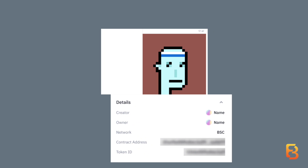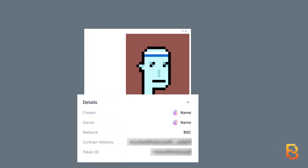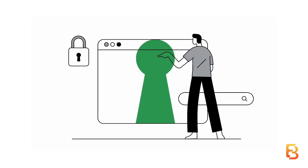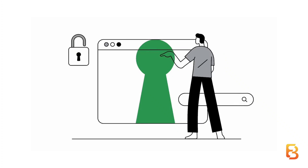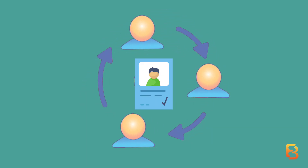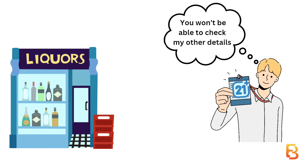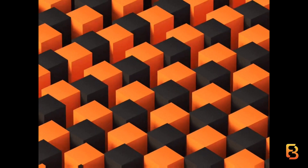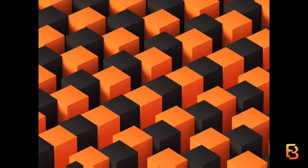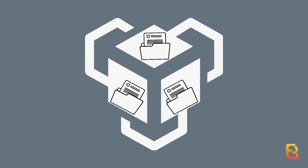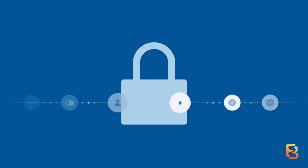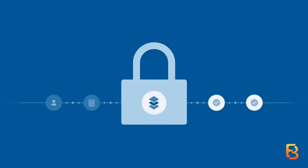NFTs are associated with public wallet addresses, meaning anyone with the address can view the NFTs a user owns or has ever owned. VCs, however, are privacy-preserving and aren't publicly viewable — users can share their credential only when required, and they allow for selective disclosure, meaning you disclose only what is needed. Your passport is your credential — would you want that to be publicly viewable? All personally identifiable information in the case of VCs is off-chain. What's stored on the blockchain is only the decentralized identifier of the issuer, which is a huge privacy benefit and inherently clashes with the design of NFTs.